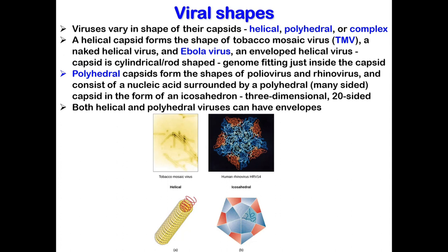Polyhedral viruses consist of nucleic acid surrounded by a polyhedral, or many-sided, capsid — usually in the form of an icosahedron. Icosahedrons are 3D, 20-sided structures with 12 vertices. Vertices is the plural of vertex, which is a point where two or more line segments meet. The icosahedral structure can be seen at the bottom right of the slide.